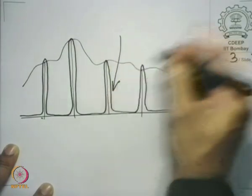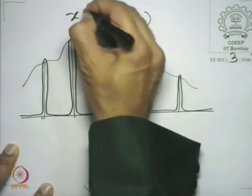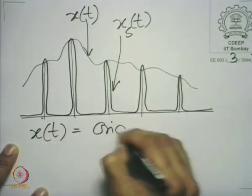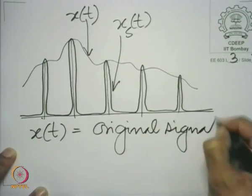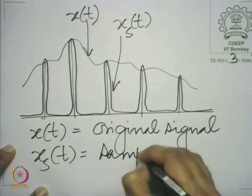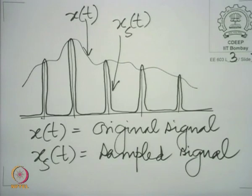Let me call this xs(t) and let me call the original signal x(t). The purpose of reconstruction is to get back x(t) from xs(t). Simple.